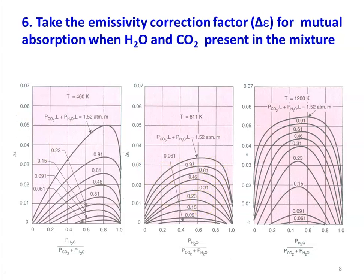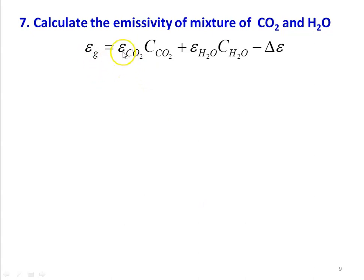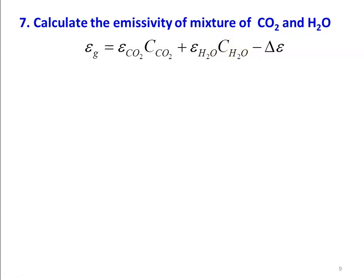Knowing all values from the five graphs, calculate the total emissivity of the gaseous mixture using: ε_G = (ε_CO₂ × C_CO₂) + (ε_H₂O × C_H₂O) − Δε, where ε_CO₂ is the emissivity of CO₂, C_CO₂ is the correction factor for CO₂, ε_H₂O is the emissivity of H₂O, C_H₂O is the correction factor for H₂O, and Δε is the correction for mutual absorption.